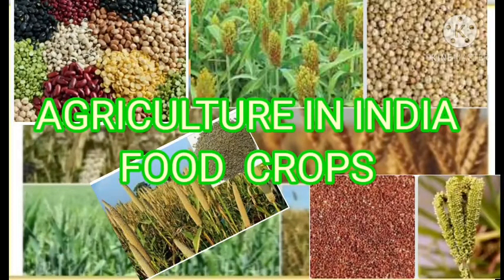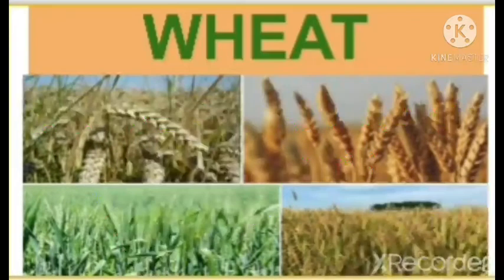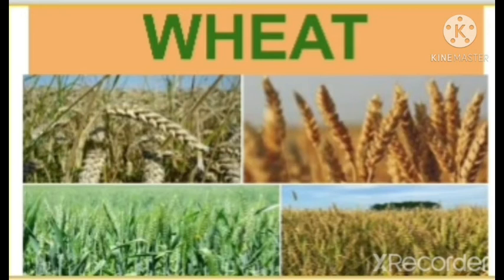Students, we are learning about agriculture in India in our second chapter. In this chapter on food crops, yesterday we learned about rice, and today we will learn about wheat. Wheat is a temperate grass.